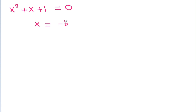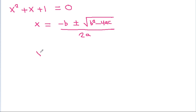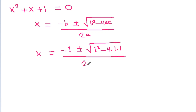So, x will be equal to minus b plus or minus square root of b² minus 4ac, divided by 2a. Here b is 1, so x equals minus 1 plus or minus square root of 1² minus 4 times 1 times 1, divided by 2, which gives minus 1 plus or minus square root of minus 3, all over 2.